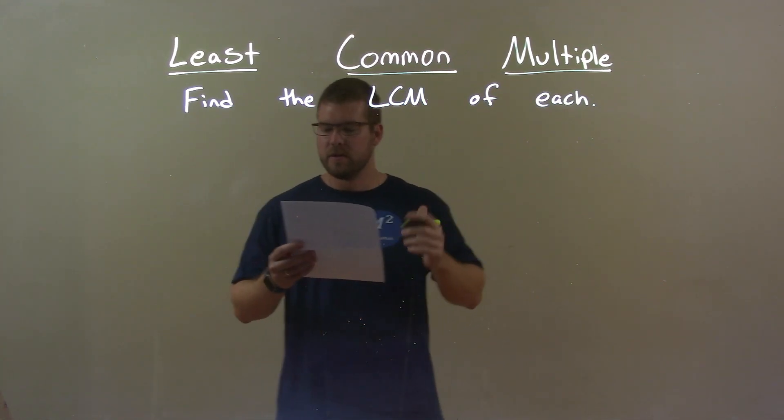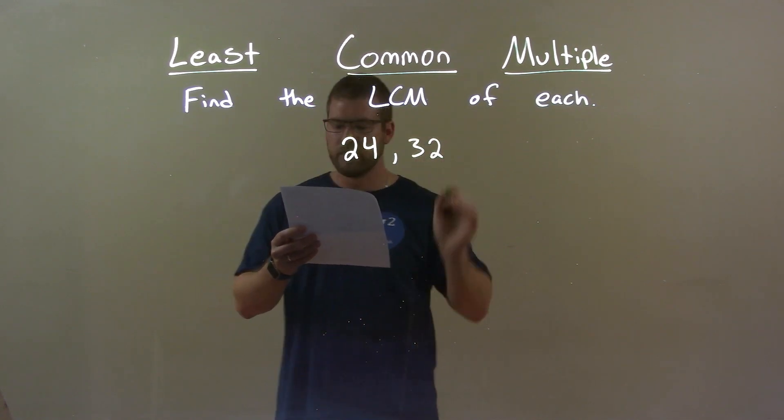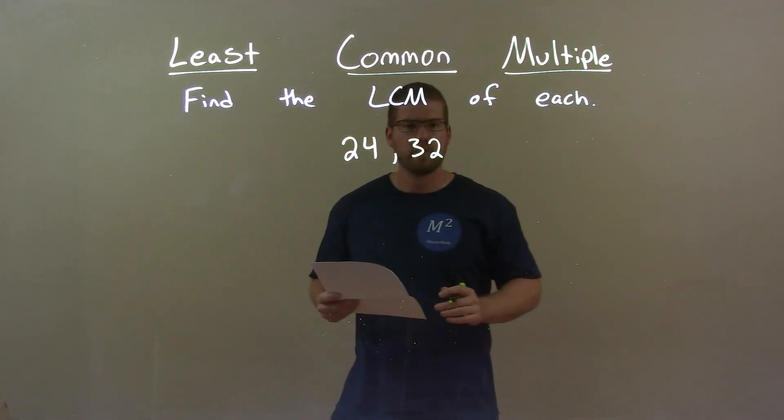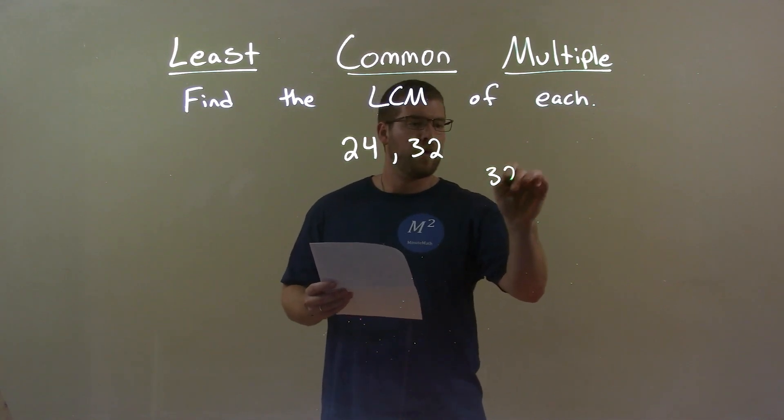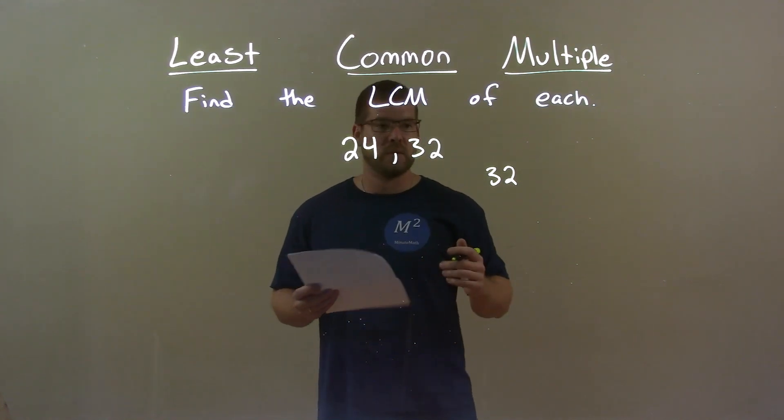If I was given these numbers, 24 and 32, I take the larger of the two numbers, 32, and find its multiples. As I go through, I try to see if that multiple can be divided by 24.